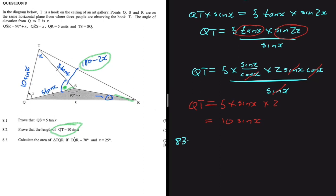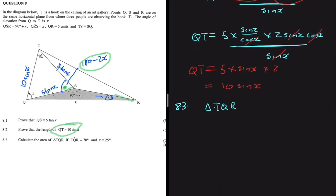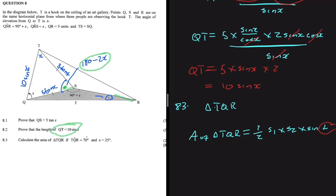For 8.3, we find the area of triangle TQR. The area formula is: Area = ½ · side1 · side2 · sin(included angle). The included angle TQR is given as 70°, and x = 25°. The two sides sandwiching that angle are QT and QR.